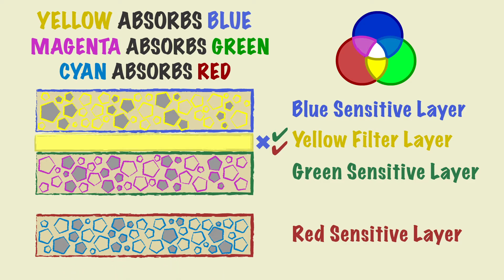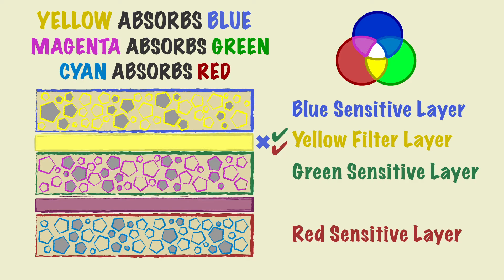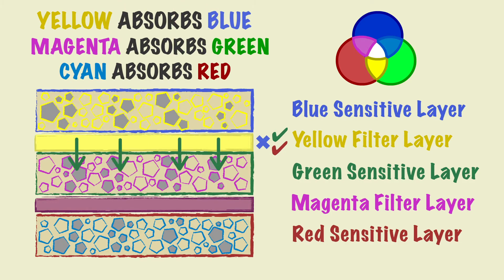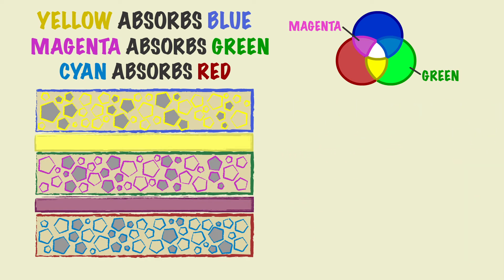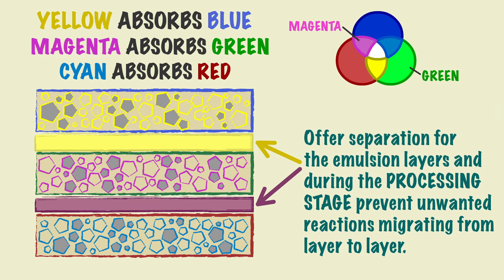There is also an additional interlayer between the green and red sensitive emulsion. This is a magenta filter layer, used to absorb any remaining green light that passes through from the green sensitive layer above. Since green is the opposite of magenta, the green light is absorbed by this filter, whereas the red light is allowed to pass through. This layer, alongside the yellow filter layer, also offers some separation for the emulsion layers, and during the processing stage, prevents unwanted reactions migrating across the colour sensitive layers.